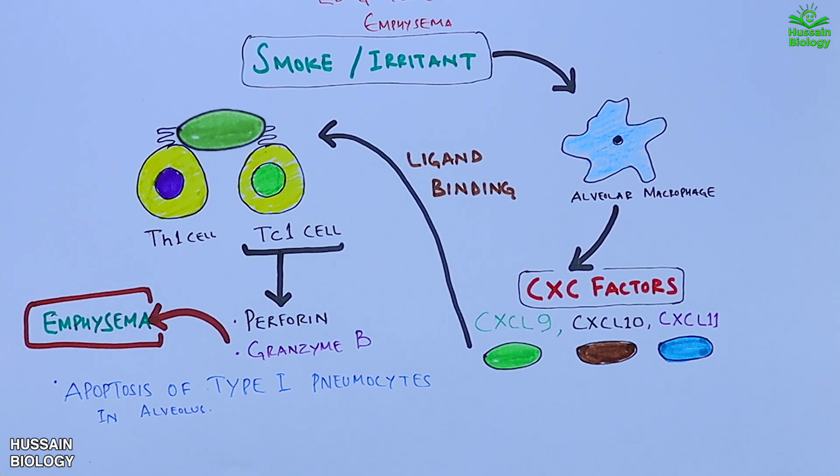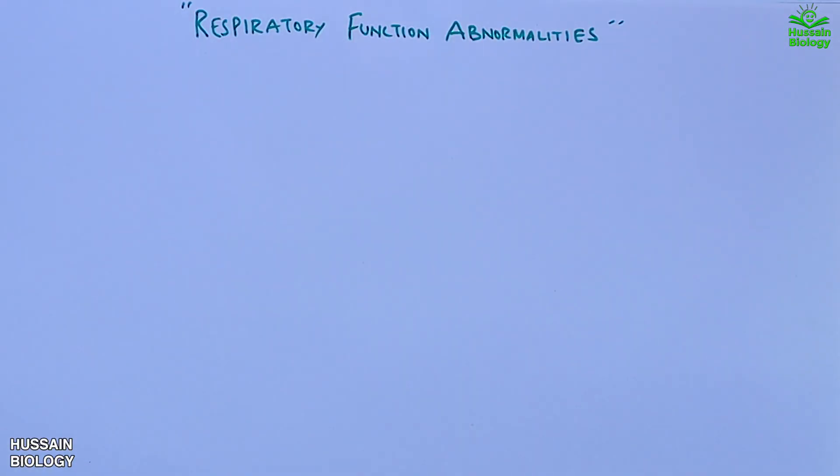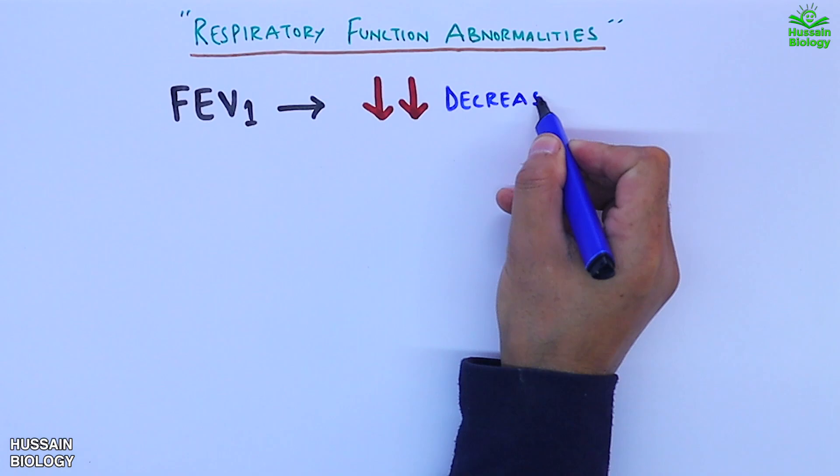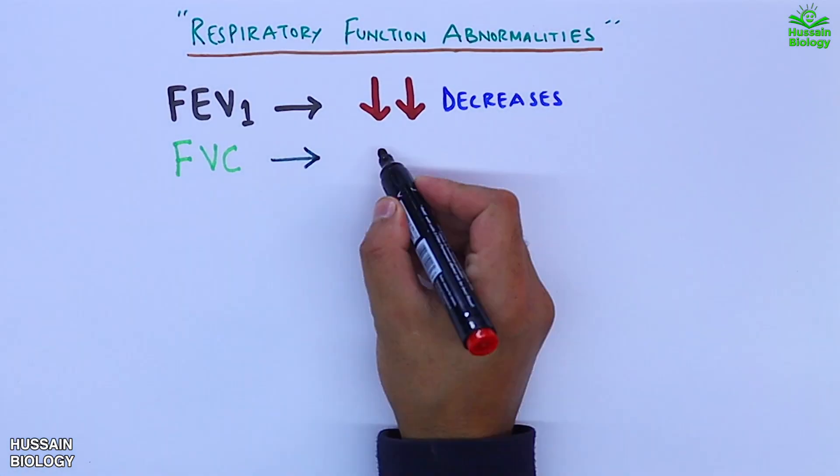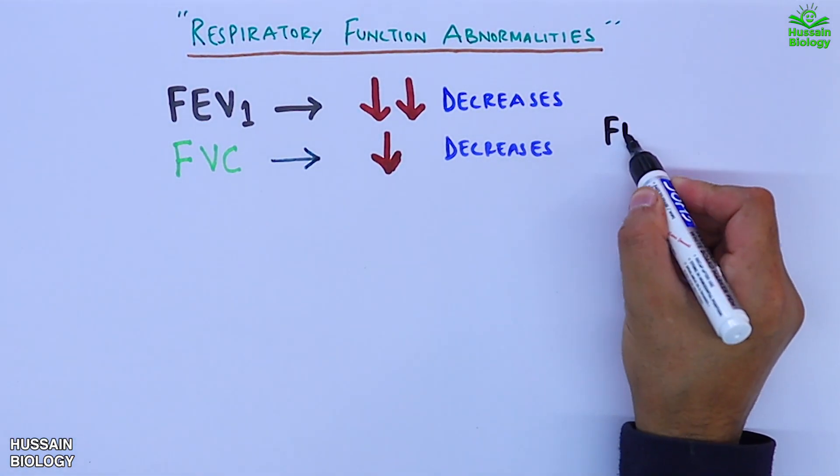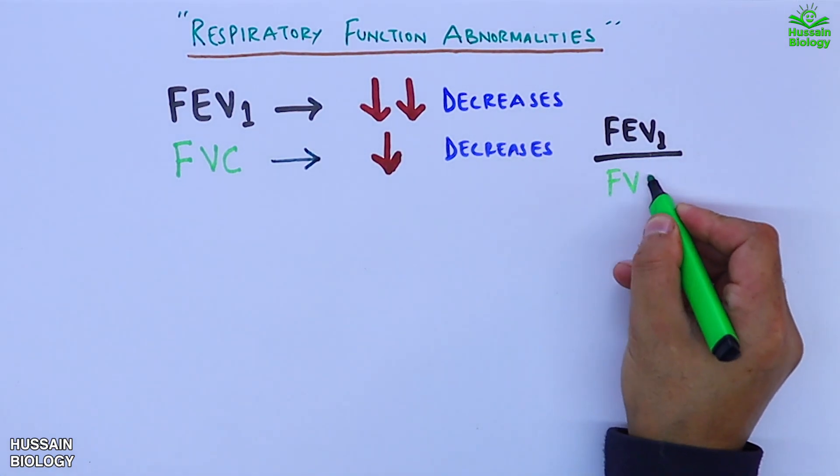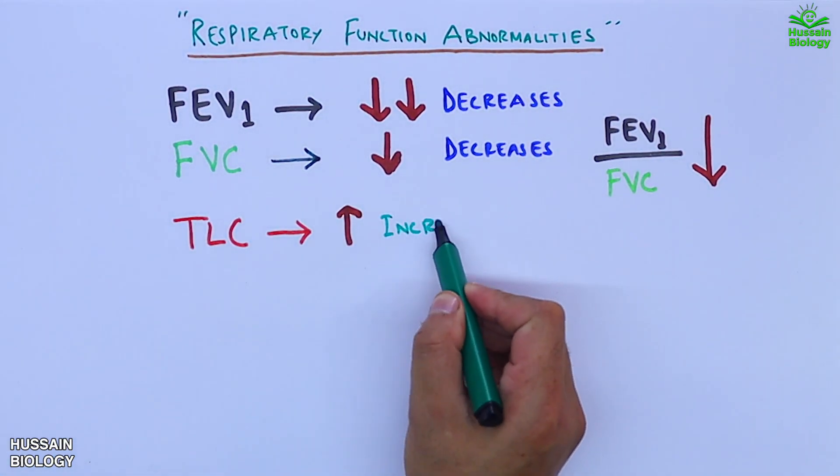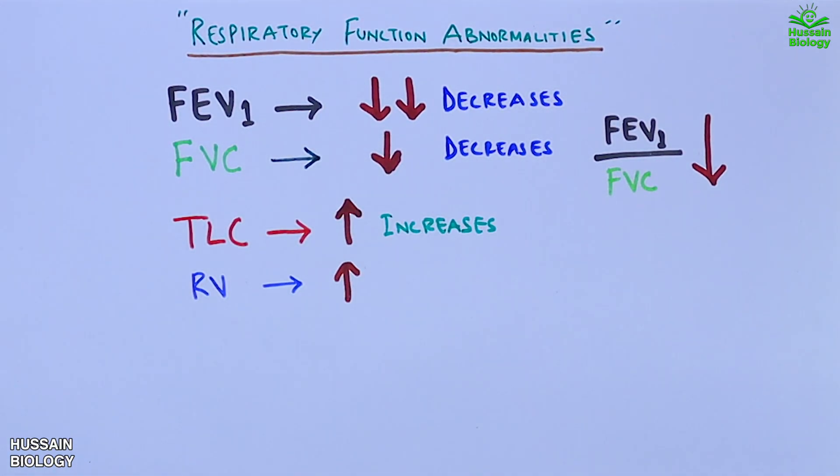Now let's see respiratory function abnormalities in amphysema. FEV1 decreases in amphysema, and FVC also decreases. Their ratio, FEV1 by FVC, also decreases. Then TLC increases, followed by the increase in RV, the residual volume.